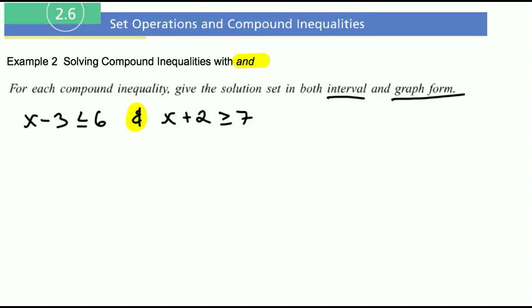So first, let's go ahead and just solve. So nothing new right there. So I'll add three. So x is less than or equal to nine. And I'm going to keep that and. Subtract two. So x is greater than or equal to five. Okay, so x is less than or equal to nine and x is greater than or equal to five.